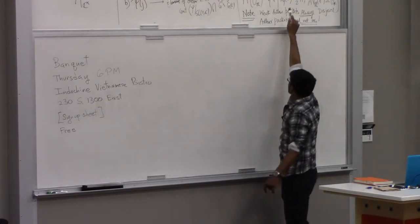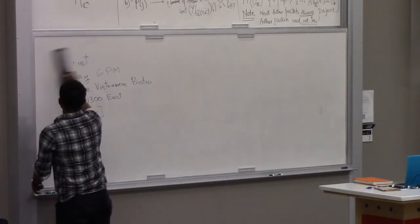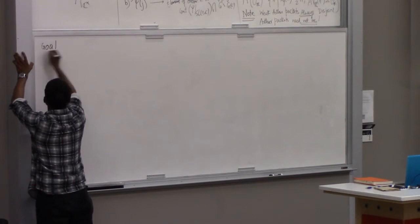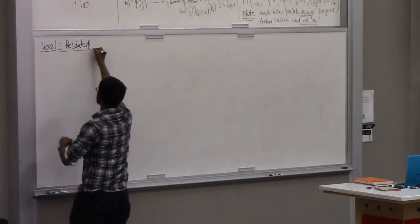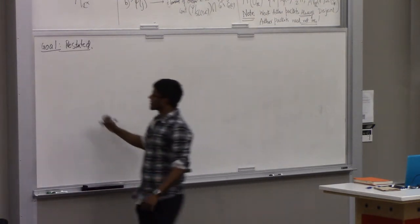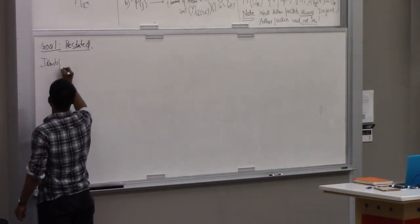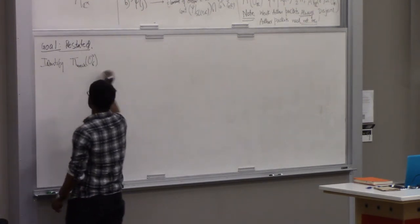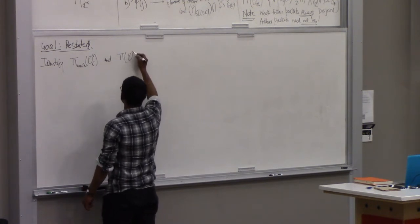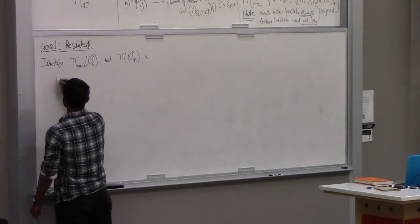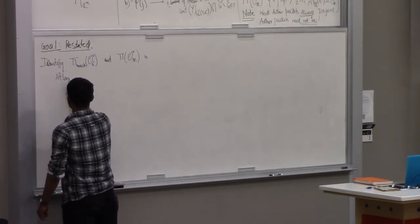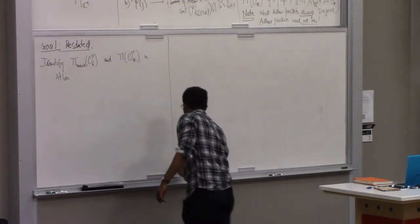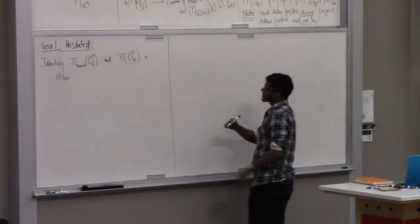So to restate our goal: make sense of these two sets in atlas. So identify pi_weak of O check C and pi of O check R in atlas. And that's basically the chunk of the rest of the talk. So I will explain how this identification works, and we will move ahead and see how to actually work it out in a bunch of examples.